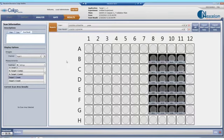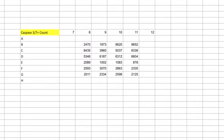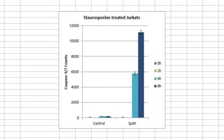All the data can be exported to Excel as a CSV file in a plate-based layout. Each file that is exported to Excel contains the number of caspase-3-7-positive cells. Generated bar graphs show a time-dependent increase in the number of caspase-3-7-positive cells in the staurosporine-treated samples.